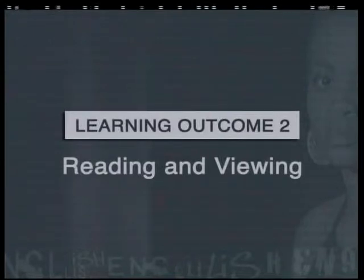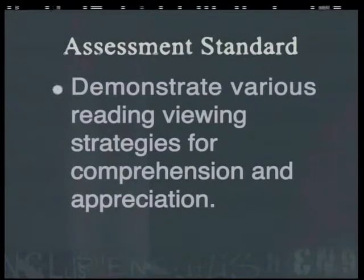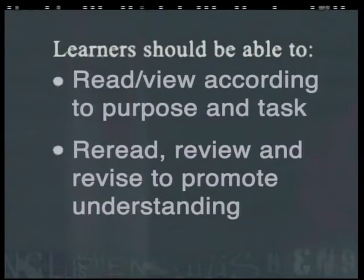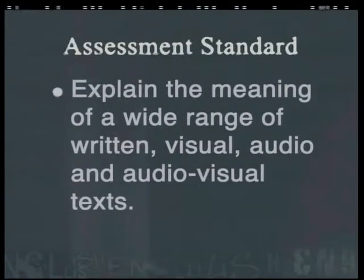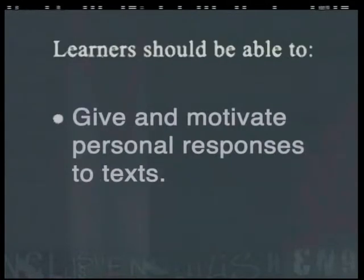The following lesson is linked to Learning Outcome 2, Reading and Viewing. It addresses the assessment standard that requires learners to demonstrate various reading and viewing strategies for comprehension and appreciation. Learners should be able to read and view according to purpose and task, and re-read, review and revise to promote understanding. This lesson also addresses the assessment standard which requires learners to explain the meaning of a wide range of written, visual, audio and audiovisual texts, and give and motivate personal responses to texts.